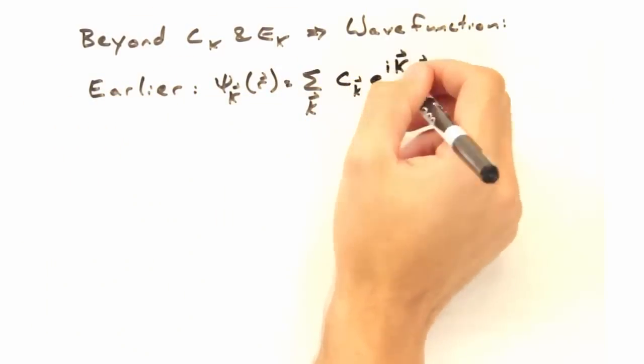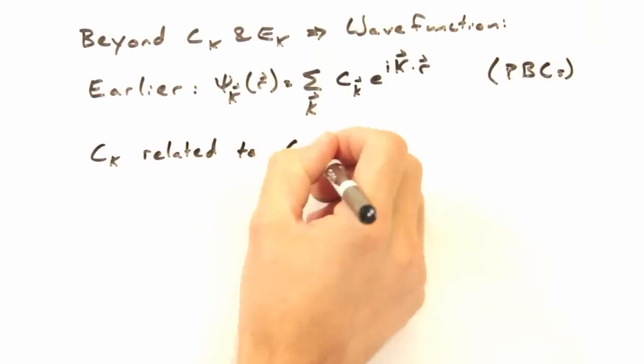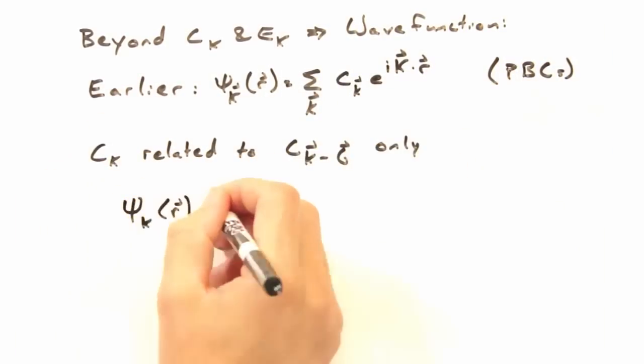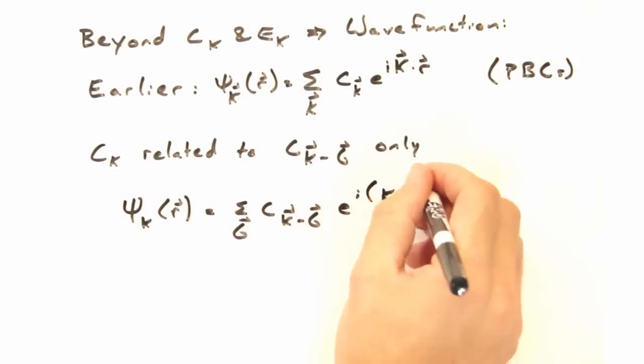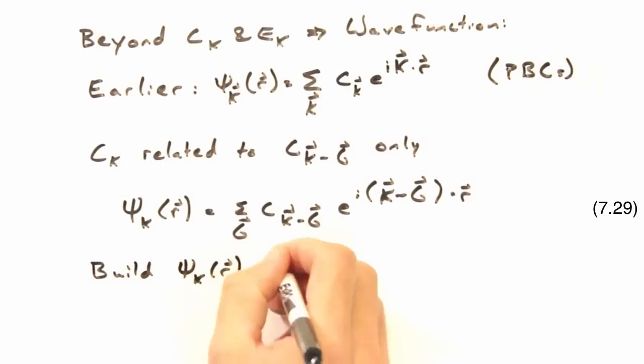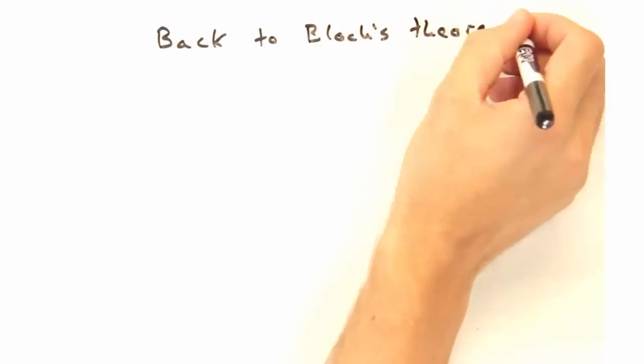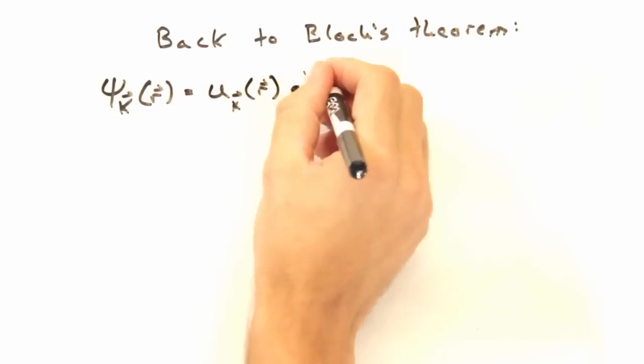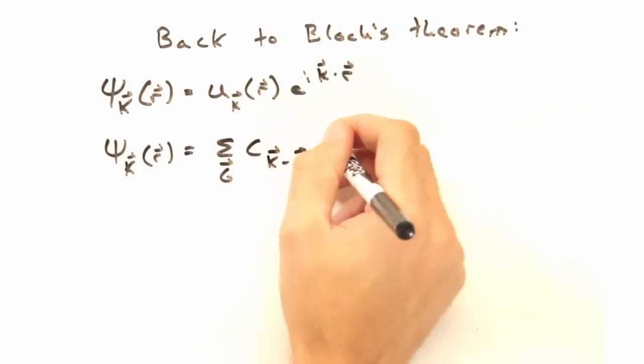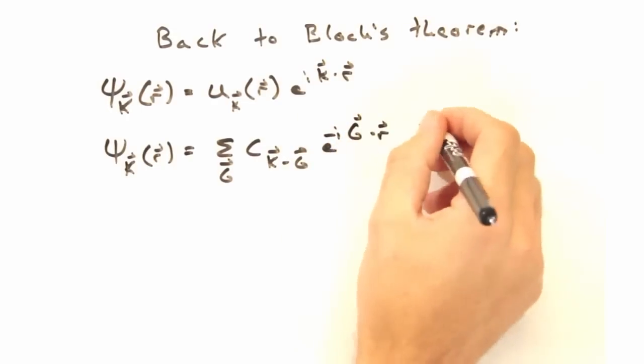Because our c k coefficients are now related to only those shifted by g, we can rewrite our wave function in a particular k vector so that it's now periodic on the atomic scale. This is a somewhat subtle point, but very important, because now we only use a subset of our k wave vectors that satisfy periodicity in the sample and the atomic length scales. So now we can come back to Bloch's theorem to solve for the modulation term u of r by separating out this e to the i k dot r term.